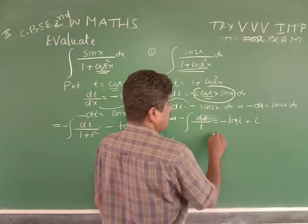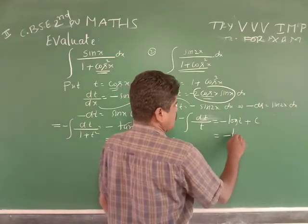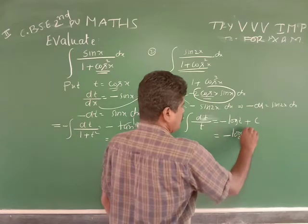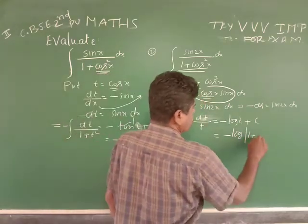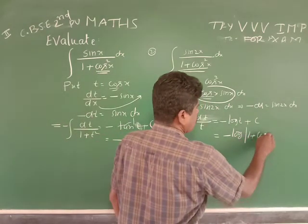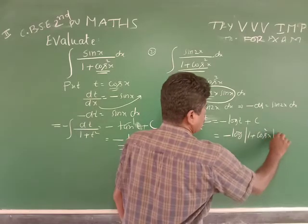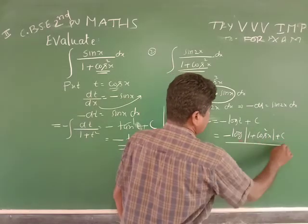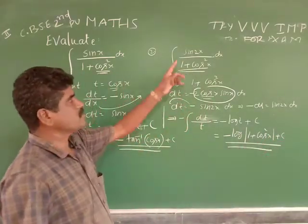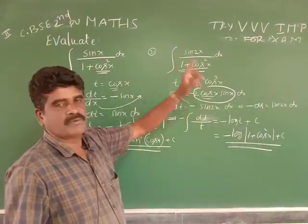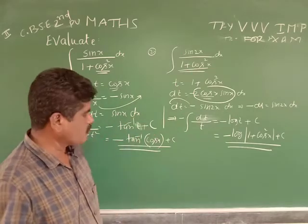The final answer is minus log(1 plus cos²x) plus C. That is the integration of sin(2x) divided by 1 plus cos²(x).